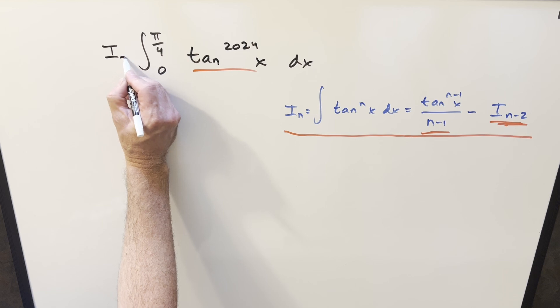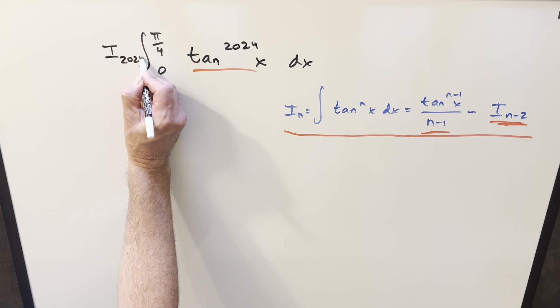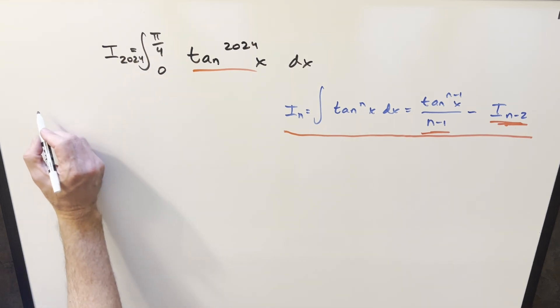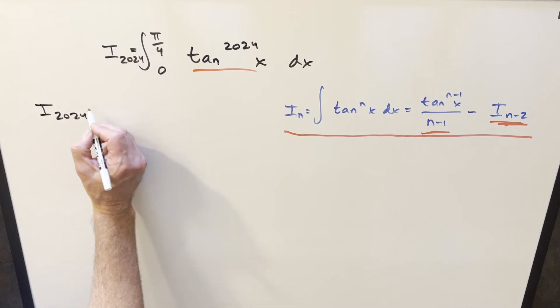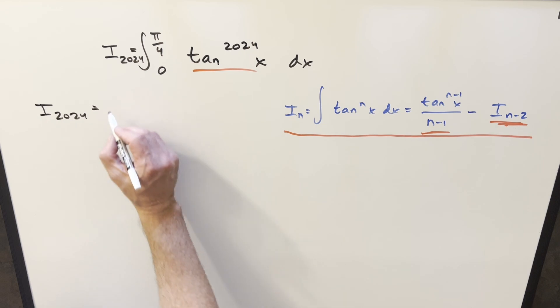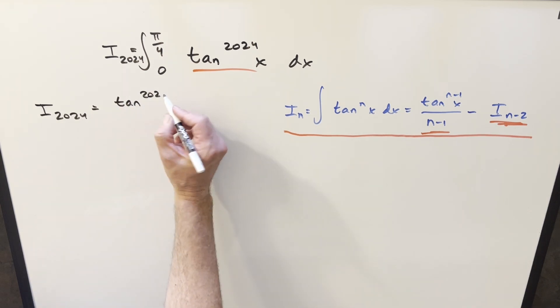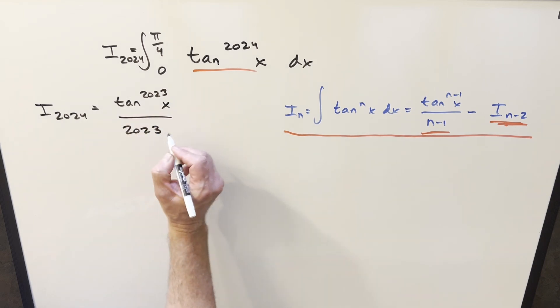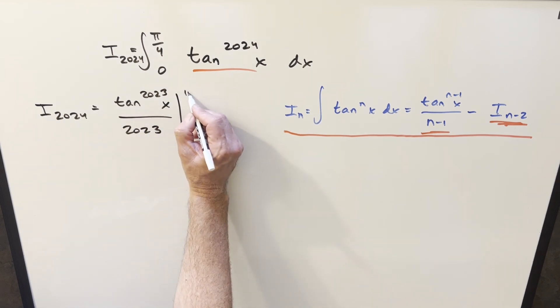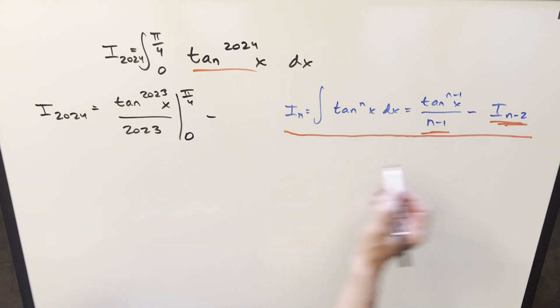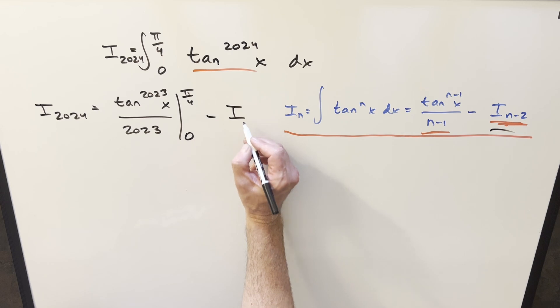So what we can do is we can define this as I_2024. And we can use the formula and start trying to get a few values. So for I_2024, if we plug in 2024 here, we're going to have (n-1) tan^(2023)x over 2023, and we need to evaluate that from 0 to pi over 4. And then for the second part, we're going to get another integral back, but we'll abbreviate it as I_2022.